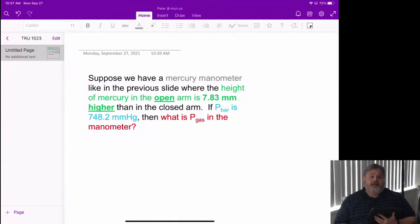So here we have the problem that you've been asked to solve. Suppose we have a mercury manometer with the height of mercury in the open arm at 7.83 millimeters higher than in the closed arm. If we know the barometric pressure, then what's the pressure of the gas in the manometer?